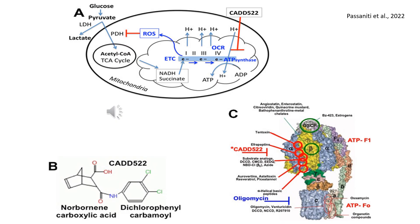Glucose metabolism: pyruvate enters the TCA cycle via pyruvate dehydrogenase (PDH), fueling the ETC within NADH and succinate, and ATP synthase.